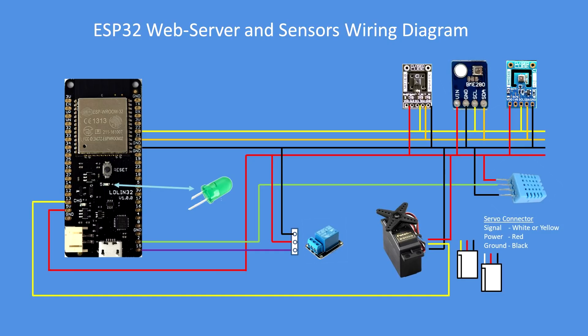There is no native servo function in the ESP32, so I've made use of the pulse width modulation control — the same principle used for LED control.